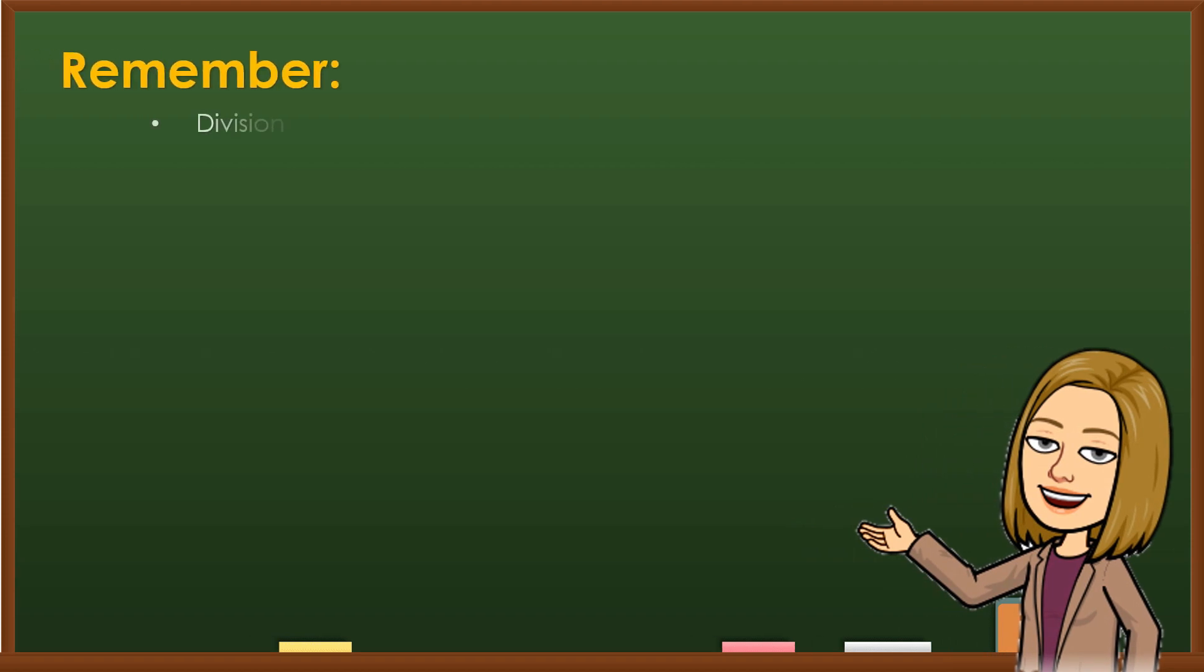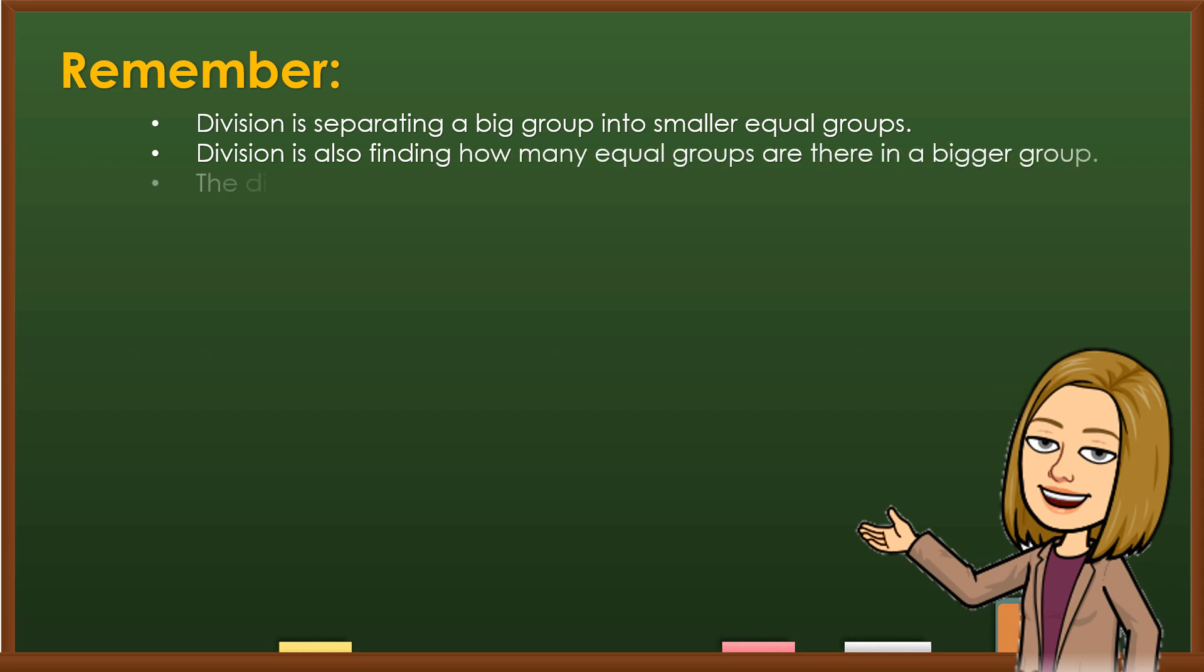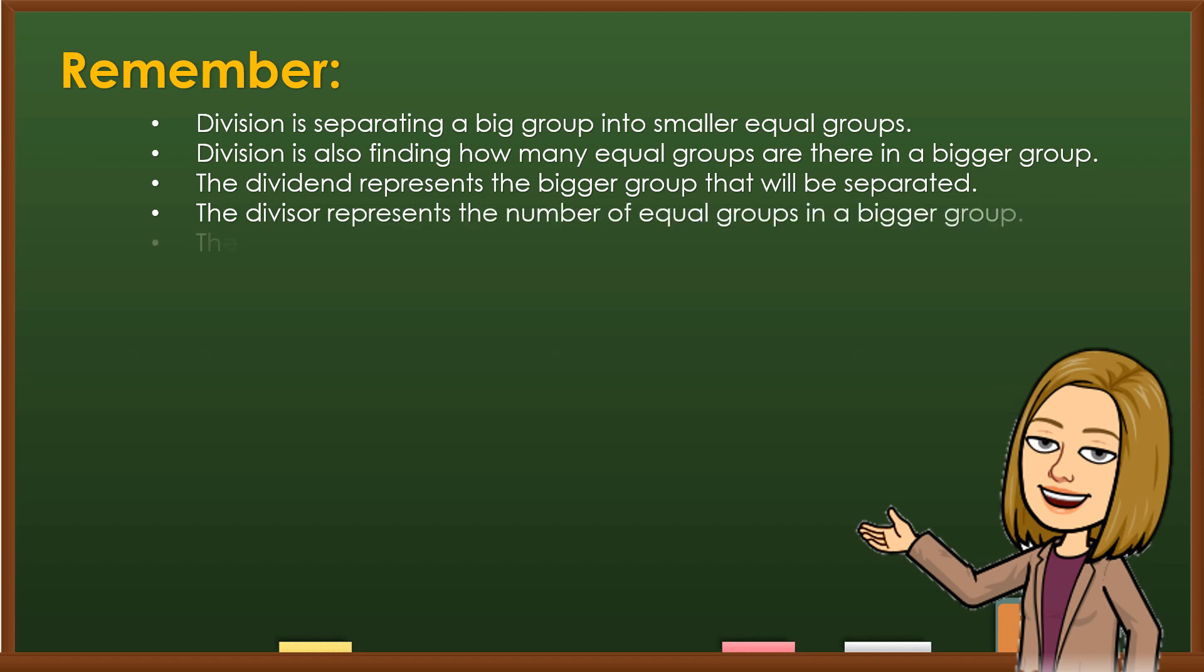Remember, division is separating a big group into smaller equal groups. Division is also finding how many equal groups are there in a bigger group. The dividend represents the bigger group that will be separated. The divisor represents the number of equal groups in a bigger group. The quotient is the answer in division.